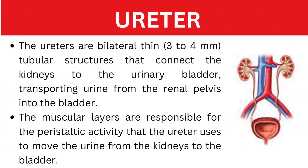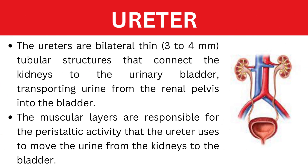The second part of the urinary system is the pair of ureters, which are bilateral thin 3-4 mm tubular structures that connect the kidneys to the urinary bladder, transporting urine from the renal pelvis into the bladder. The muscular layers are responsible for the peristaltic activity that the ureter uses to move the urine from the kidneys to the bladder.